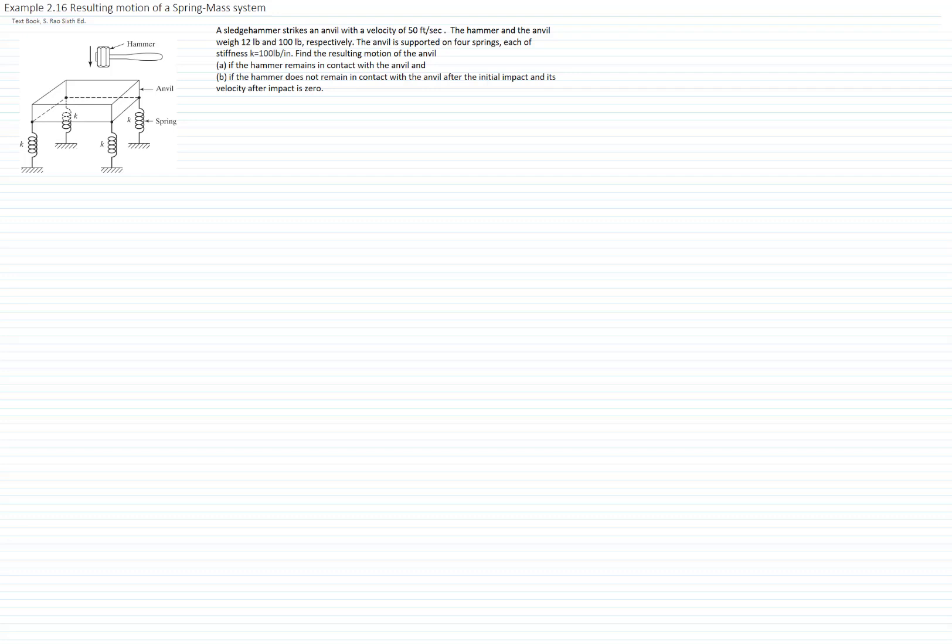This is example number 216 and we will find the resulting motion of a spring-mass system. This is an example from our textbook, 6th round edition. As you see in the figure, a slipper hammer strikes an anvil with a velocity of 50 feet per second. The hammer and the anvil weigh 12 pounds and 100 pounds respectively. The anvil is supported on four springs each of stiffness k equals 100 pounds per inch. We want to find the resulting motion of the anvil: first, if the hammer remains in contact with the anvil, and second, if the hammer does not remain in contact with the anvil after initial impact.